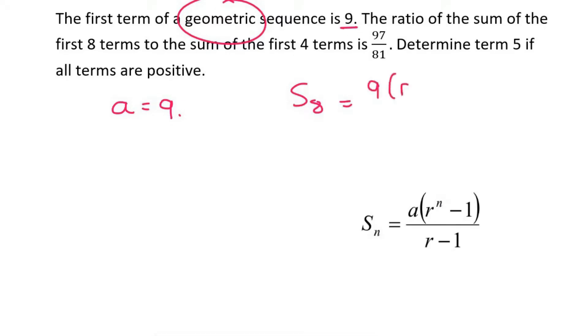But we have no idea what the ratio is. And it says that the sum of the first 8 terms, okay, so that's R^8 minus 1 over R minus 1. And then they also talk about the sum of the first 4 terms, so let's fill that in. That's also going to be 9, then it's going to be R^4 minus 1 over R minus 1.